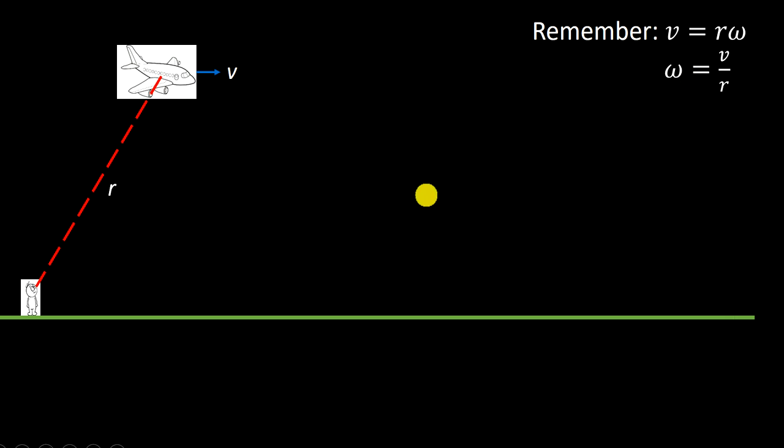Now, the reason we haven't been doing this is because, obviously, another few moments later, when the plane is now further ahead, we have a totally different r value. So the angular velocity would change. v is the same, but r is clearly different.